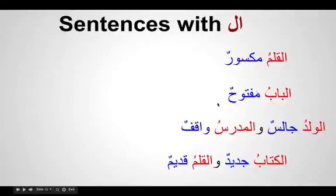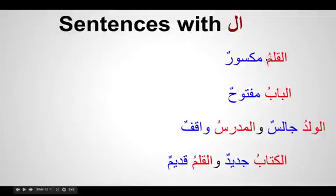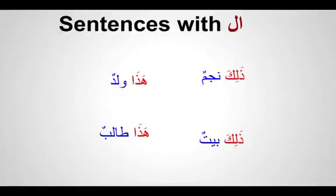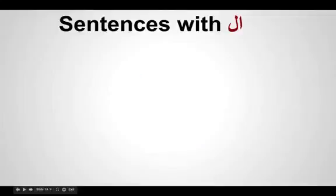Double damma — and we know the sign of double damma is indefinite. So the khabar, when it is one word, is indefinite and carries double damma. Muptada is always definite with al- and a single damma. Even when the muptada is a demonstrative pronoun like dhalika or hadha, the khabar that comes after it still carries double damma. For example: dhalika najmun, hadha waladun. The khabar when it is a single word is also marfu.